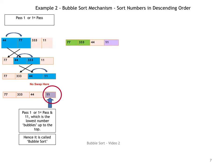Now let's look at the second pass. We have the array 77, 333, 44, and 11. We compare the first two numbers, 77 and 333, and ask: is 77 less than 333? Yes it is. So we swap the two numbers — 77 goes here, 333 goes there — and all the other numbers in the array stay as they are.